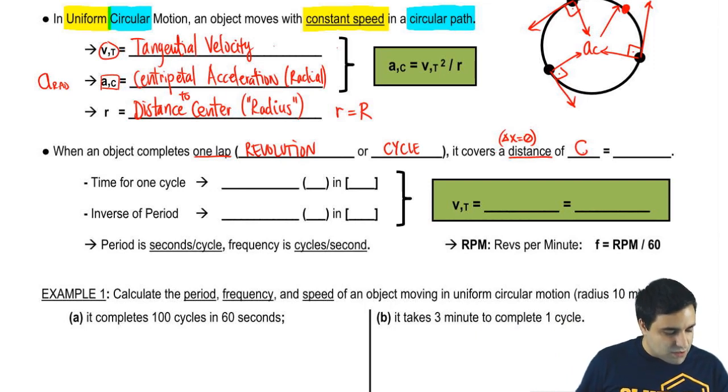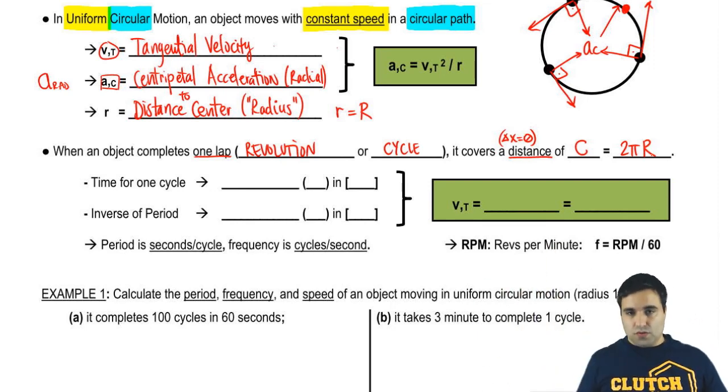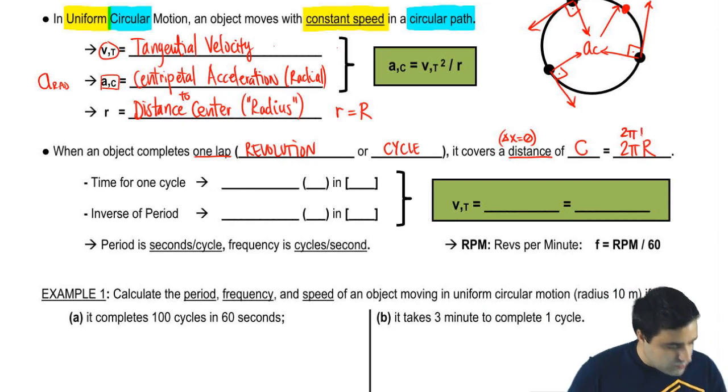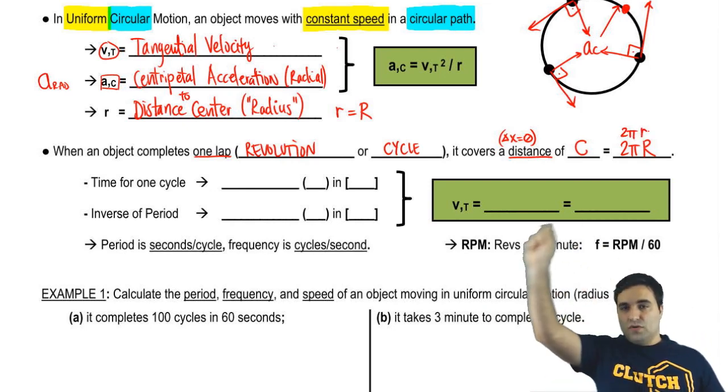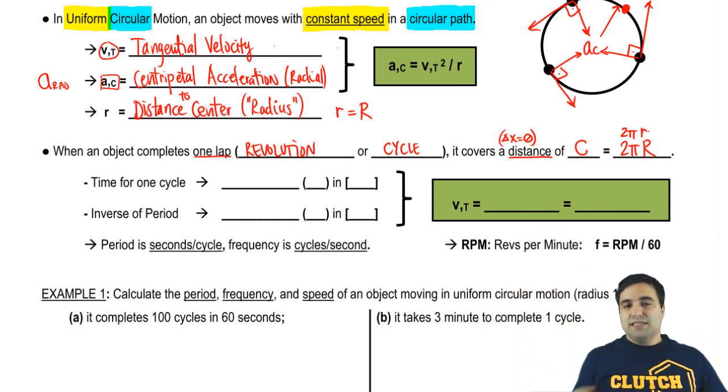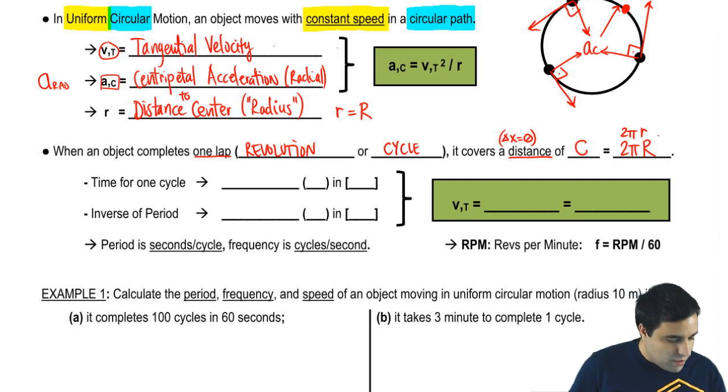But the distance is the circumference, which is 2πr. Where r is the radius of the circle that you made. You could think of this as 2πr as well, because if you go around a circle of radius r, then your distance from the center, little r, equals big R. So a couple things when you go around a circle. The distance is 2πr.